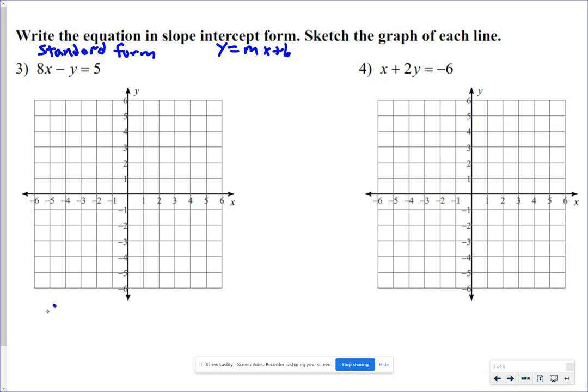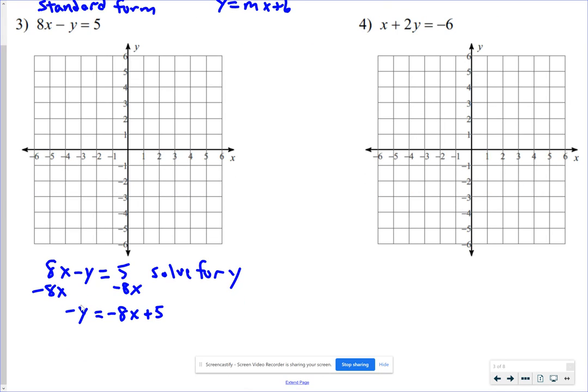So we're going to solve this equation for y. I'm going to move it down here. 8x minus y equals 5. To solve that for y, we're going to subtract an 8x. The negative is still there in front of the y. I'm going to keep the order so that the x is in the front. And I'm going to divide both sides by negative 1 or multiply by negative 1.